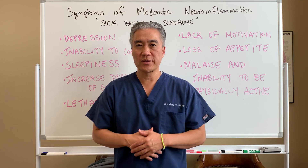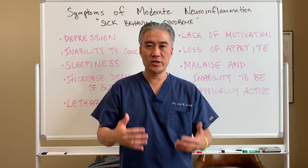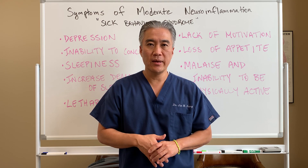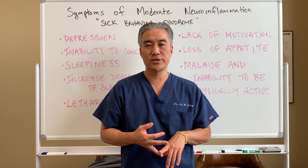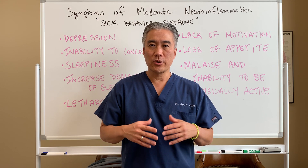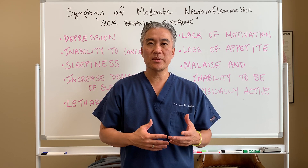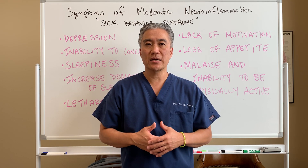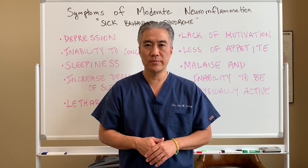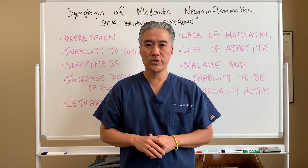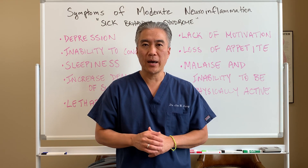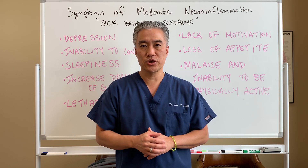We're going to continue on the journey of neuroinflammation. Last week we went over different types of conditions that may present as neuroinflammation — things like concussion, autism, Alzheimer's. We also gave you a list of different symptoms you might experience if you had a mild case of neuroinflammation. Go back and watch those videos from the previous week, and today we're going to talk about moderate neuroinflammation.